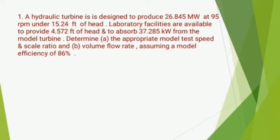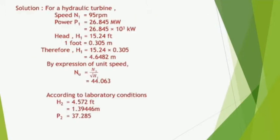A hydraulic turbine is designed to produce 26.845 megawatt at 95 rpm under 15.24 feet of head. Laboratory facilities are available to provide 4.572 feet of head and to absorb 37.285 kilowatt from the model turbine. Determine: (a) the appropriate model test speed and scale ratio, and (b) volume flow rate assuming a model efficiency of 86 percent.